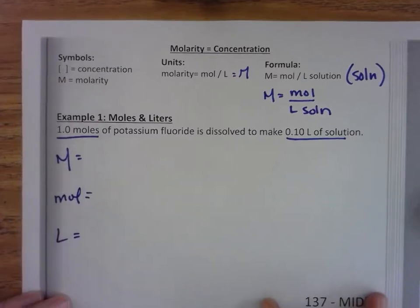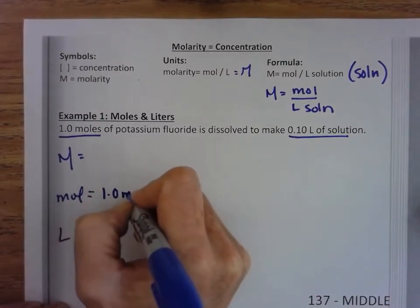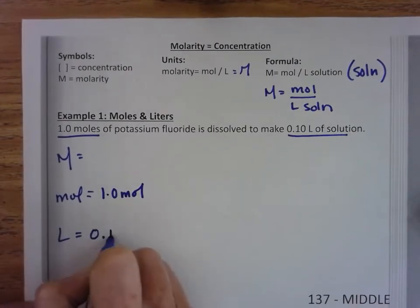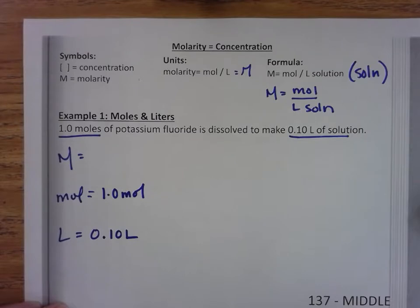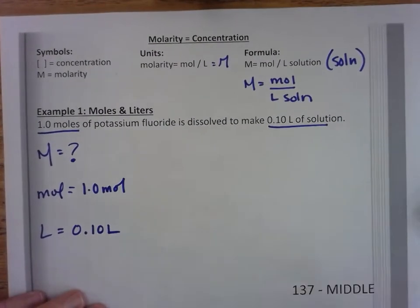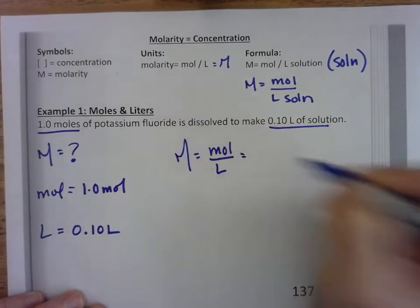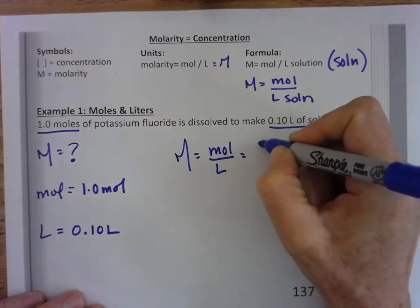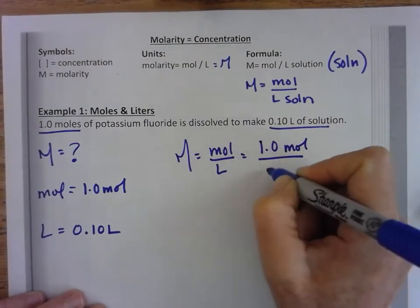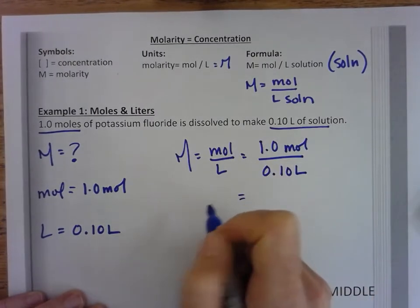If I take a look at this problem, I have 1.0 moles, and I have 0.10 liters. I'm looking for molarity in all the problems that you're going to have to do. So it's already set up perfectly. Here's my formula. 1.0 moles divided by 0.10 liters. When I do this in the calculator, I get 10.